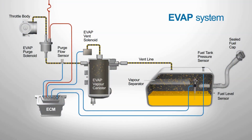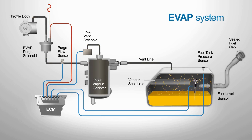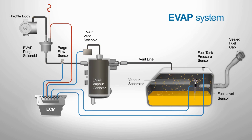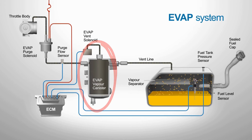The purpose of the EVAP system is simple but vital. It's designed to prevent fuel vapors from escaping into the atmosphere, which helps reduce air pollution. Basically, it's a collection of components that create a sealed environment, capturing, storing, and eventually purging volatile fuel vapors from the fuel system. When the engine is off, fuel vapors are stored in the charcoal canister instead of being released into the atmosphere.